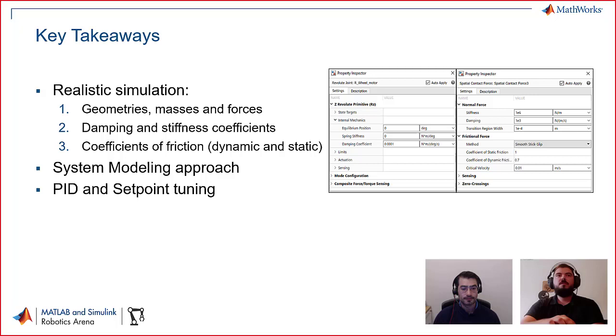use the geometries, the masses and the forces such as the gravity to have a realistic representation of the simulation. I have also used the damping and the stiffness coefficients for all the joints and the wheels, same with the coefficients of friction, the dynamic and static ones, to make a representation between the wheels which are simulated to be rubber and the ground to be simulated as if it were cement.